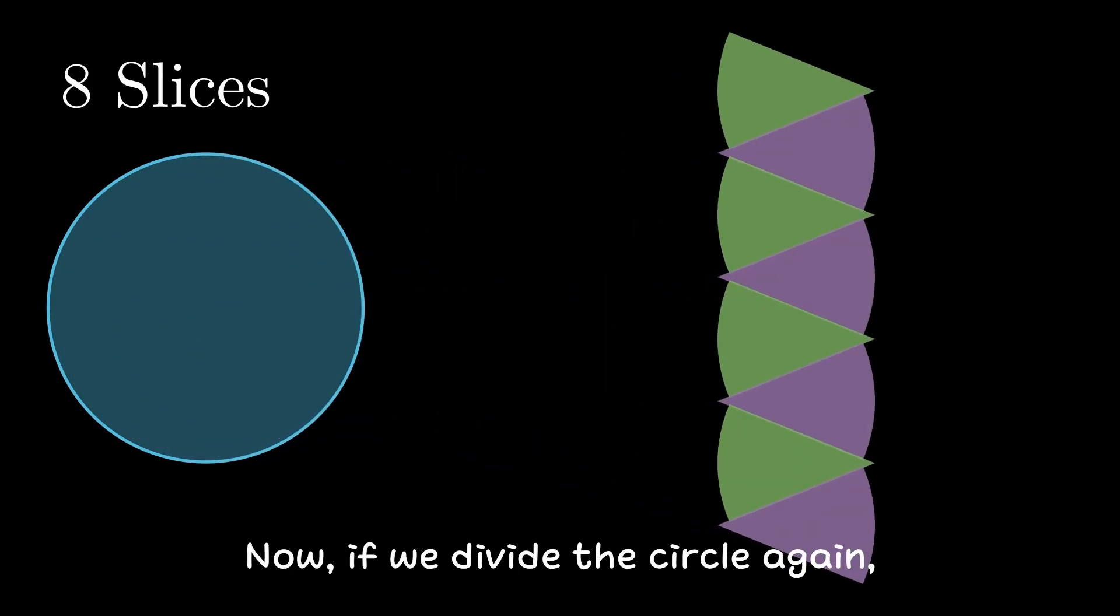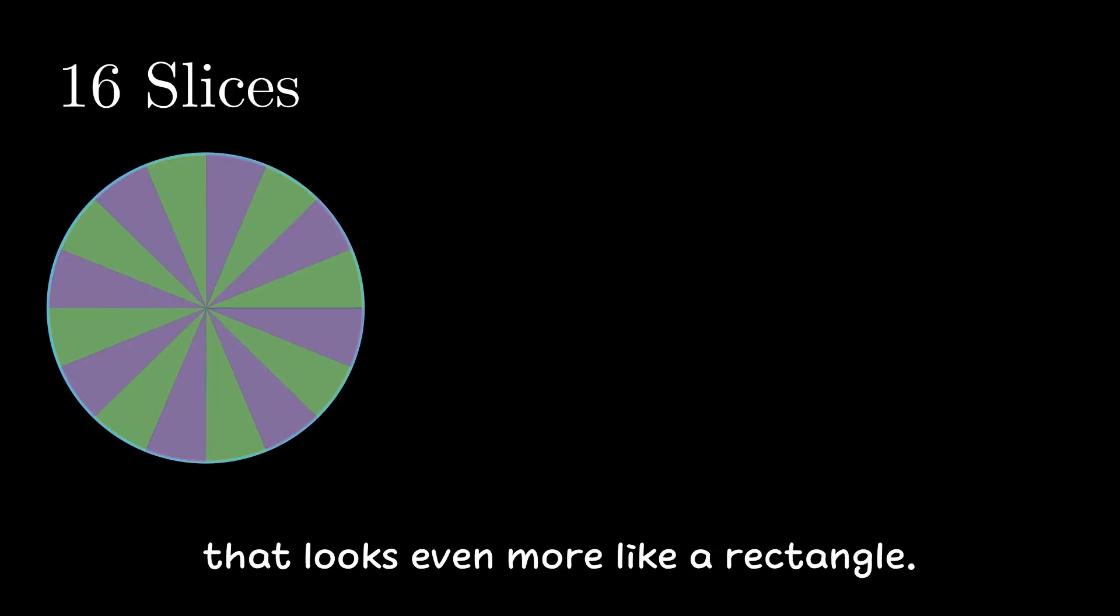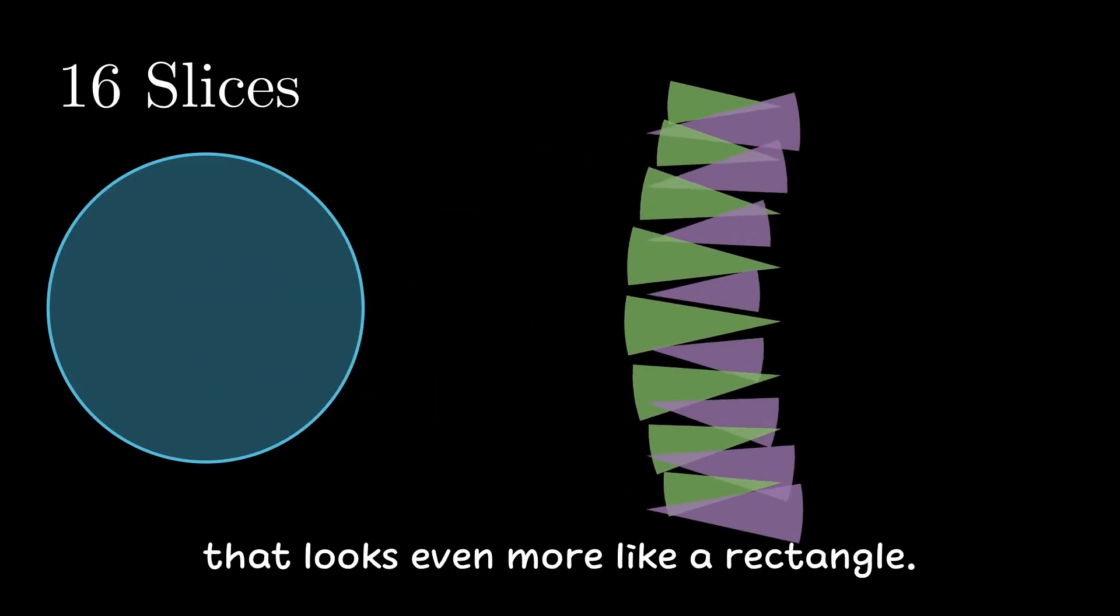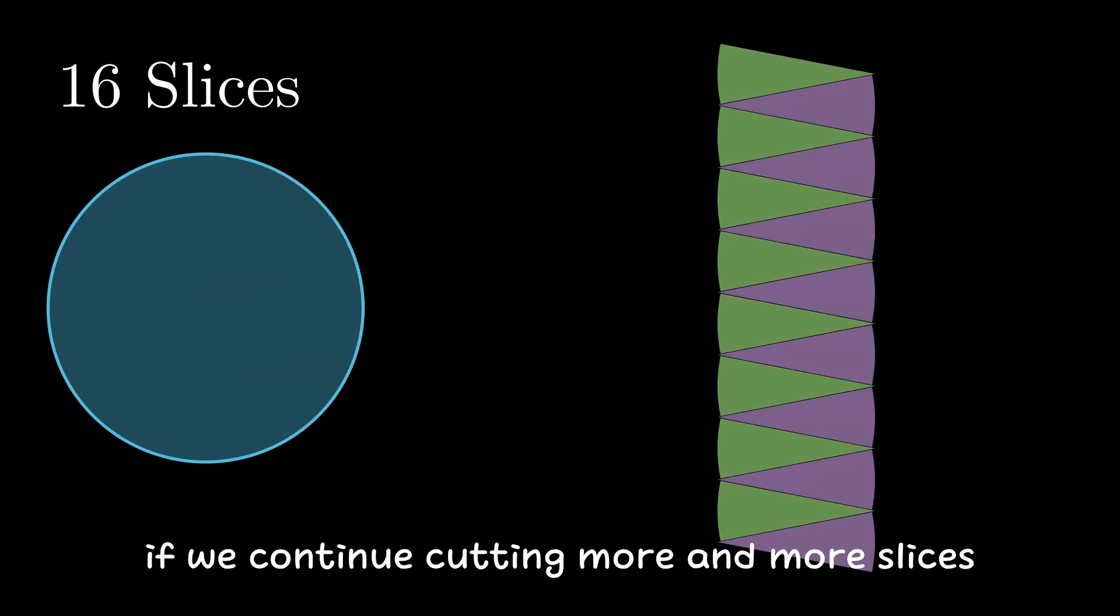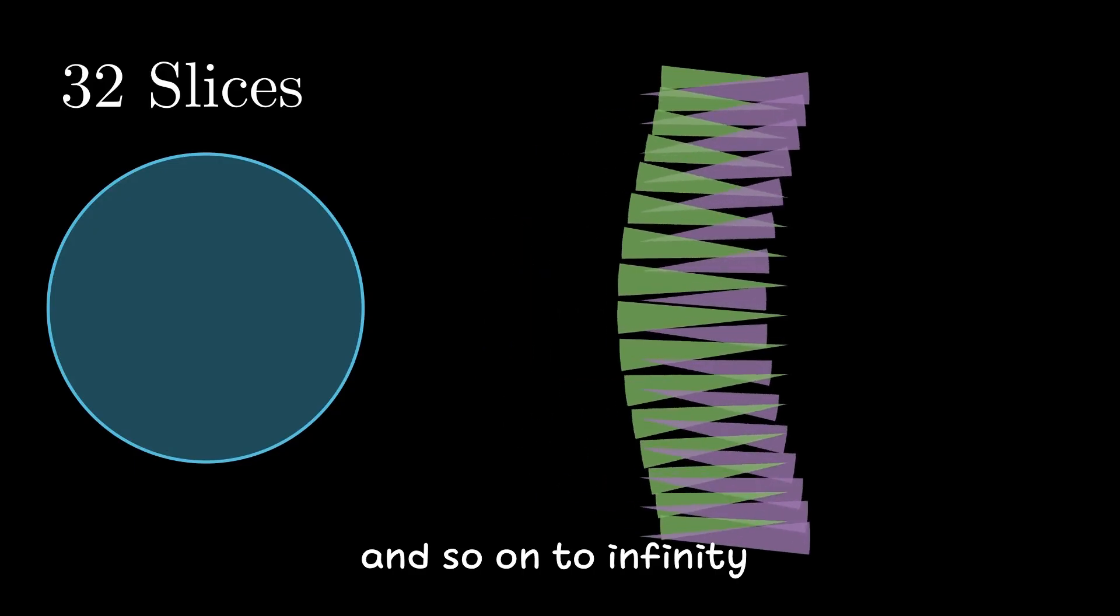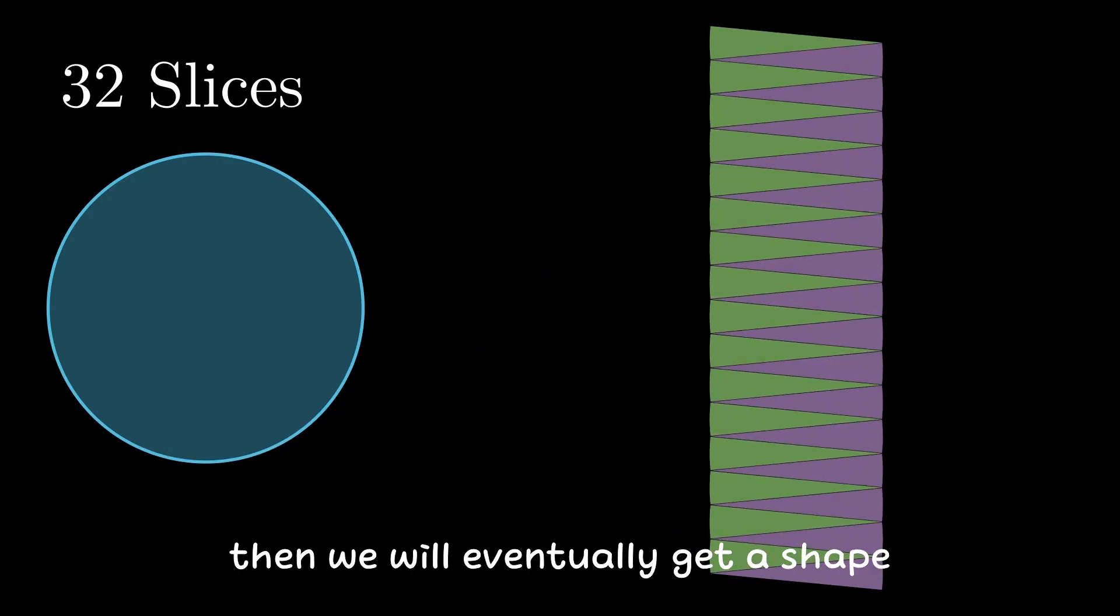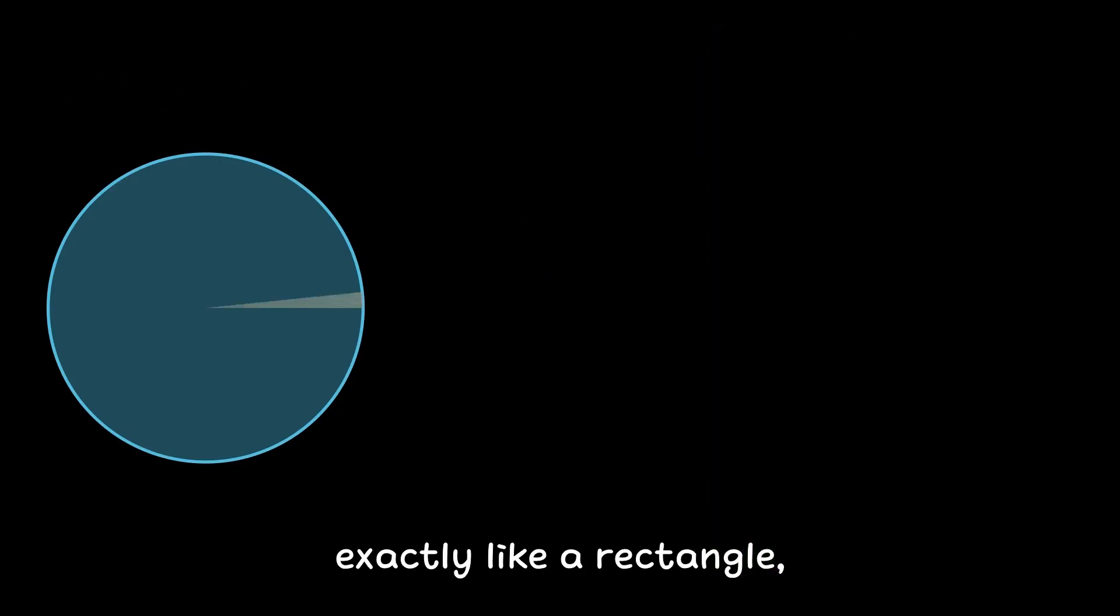Now, if we divide the circle again, but this time into 16 slices, we would create a shape that looks even more like a rectangle. He suggests that if we continue cutting more and more slices, going from 8 to 16 to 32, and so on to infinity, then we will eventually get a shape exactly like a rectangle, and thus the area of the circle.